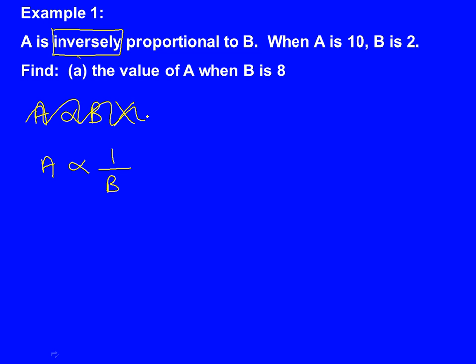We know from the previous MathsCast that this proportional sign we can't use. We need to change it into an equals sign. So when we change it to an equals sign, we'd get A equals 1 over B. But we know that when we change it to an equals sign, we must also have a K. So it will be K times 1 over B.